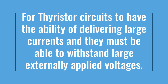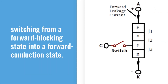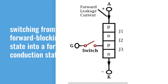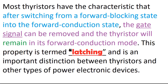For thyristor circuits to deliver large currents, they must also withstand large externally applied voltages. All thyristor types are controllable in switching from a forward blocking state into a forward conduction state. Most thyristors have the characteristic that after switching into the forward conduction state, the gate signal can be removed and the thyristor will remain in its forward conduction mode. This property is called latching and is an important distinction between thyristors and other power electronic devices.